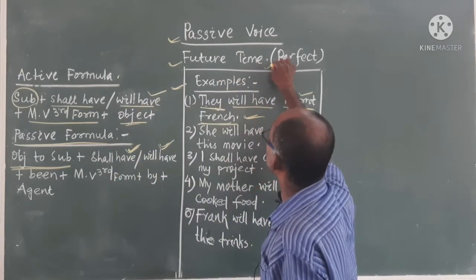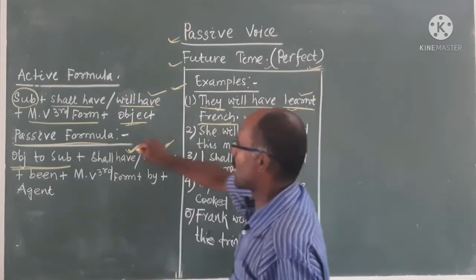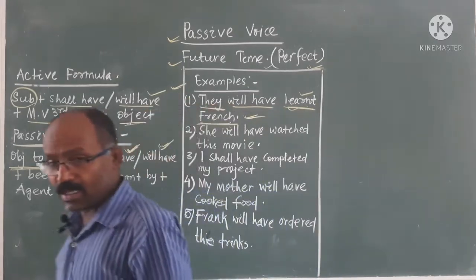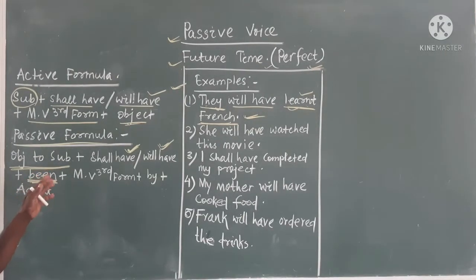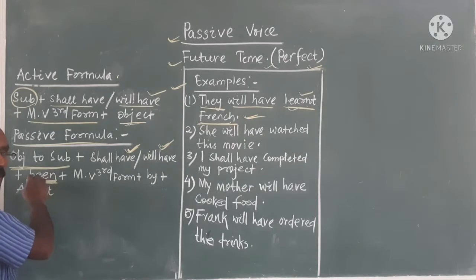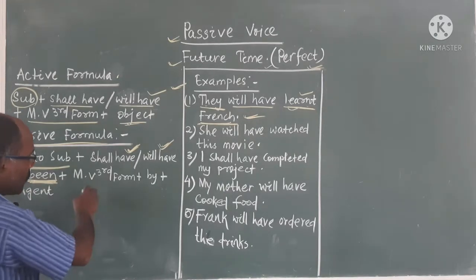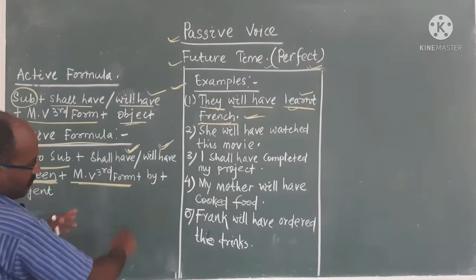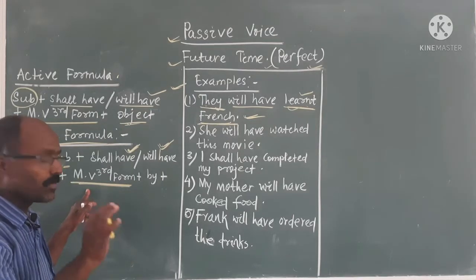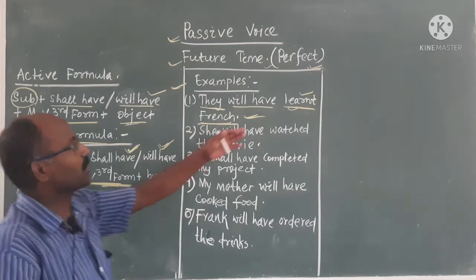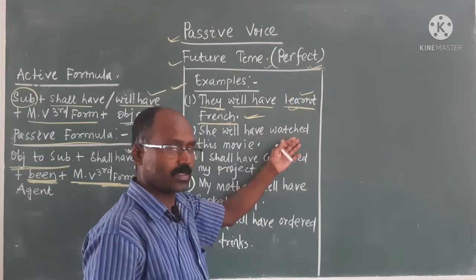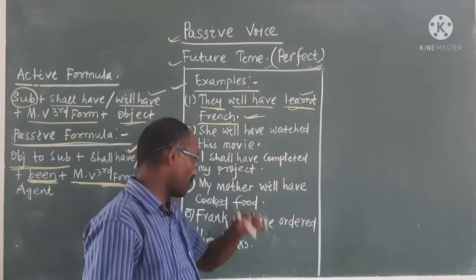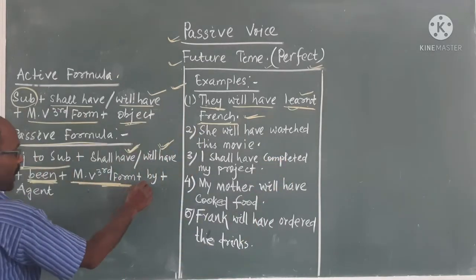Then, since we are discussing future perfect, shall have or will have is required. Then you have to add 'been' — already learned in present and past, same formula. Being is for continuous; for perfect we add 'been' extra. Then the main verb third form is used: learn→learned, watch→watched, complete→completed.